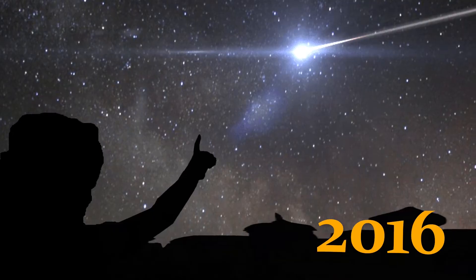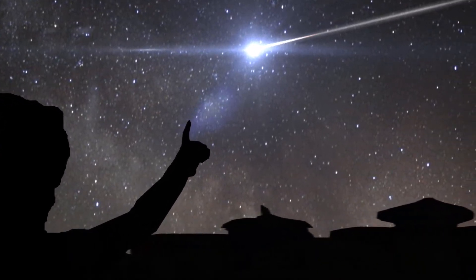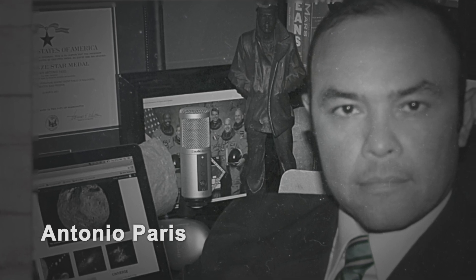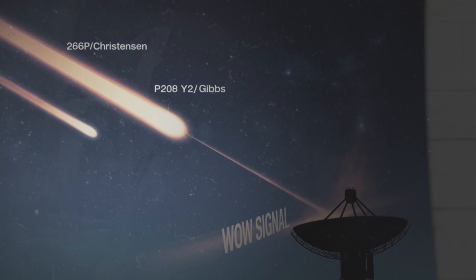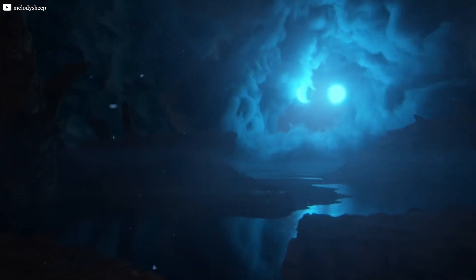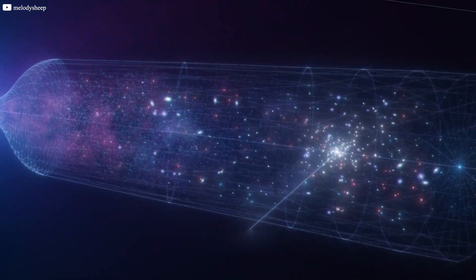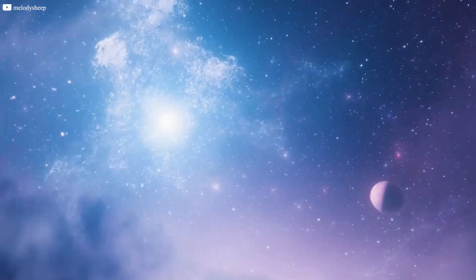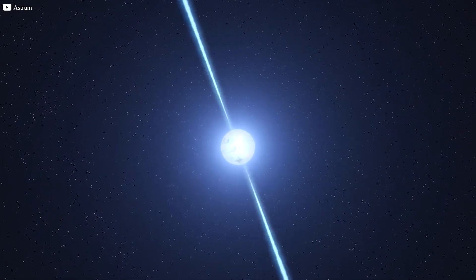The comet theory. In 2016, a theory emerged that suggested comets might have been responsible for the wow signal. Antonio Paris, an astronomer, proposed that two comets, 266P Christensen and P208Y2 Gibbs, might have been near Big Ear's line of sight on the night the signal was detected. According to Paris, the hydrogen gas emitted by these comets could have created a burst of radio waves at the exact frequency of the wow signal. The idea was that the hydrogen-rich comets could have burped this signal, causing it to appear as a strong, narrow-band burst. At first, the theory seemed plausible.